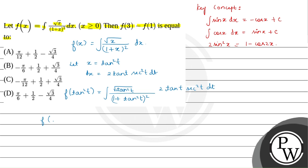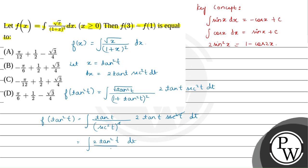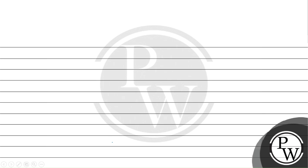We can write this as f of tan squared t equals integral of tan t divided by sec squared t whole squared, times 2 tan t sec squared t dt. Here sec squared t and the squared term get cancelled, giving integral of 2 tan squared t dt divided by sec squared t. Writing tan t as sin t over cos t, and 1 over sec squared t as cos squared t, the cos squared terms cancel.